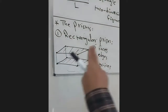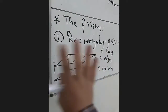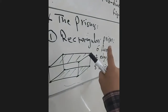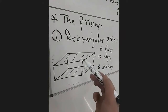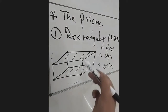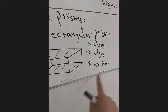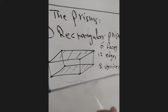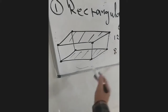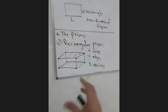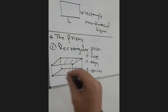So this we call a rectangular prism. It has six faces: one up, one down, and four around — all are rectangles. That's why we call it a rectangular prism. It has 12 edges, meaning 12 line segments, and it has eight vertices — the points or corners. The rectangular prism is similar to a room or a box.